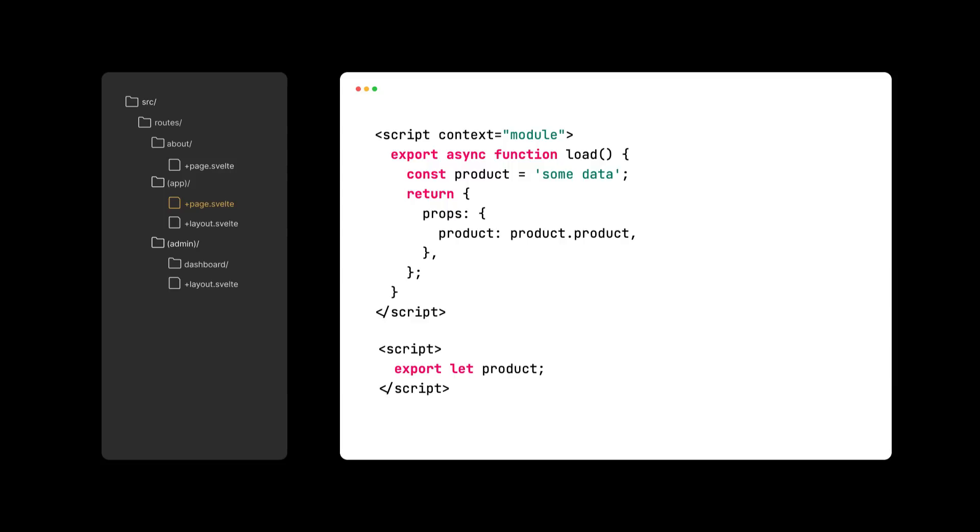Now, SvelteKit has completely gotten rid of the context module, and the load function has moved into the endpoint file. A page file can automatically load data from its sibling plus page.js route by exporting the strongly typed data prop.